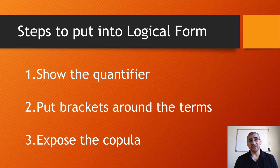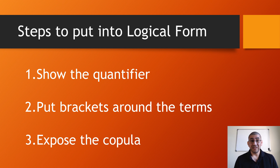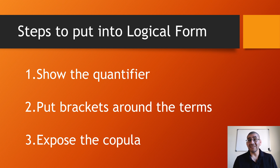The steps to putting a proposition into logical form are these: first, you must show the quantifier — expose the quantifier. If it's not exposed, put brackets around the terms so you can clearly see them. Then you're going to expose the copula, because sometimes the verb 'to be' is not visible. But every proposition has the verb 'to be,' because it is telling existence — affirming the existence of something or denying the existence of something.